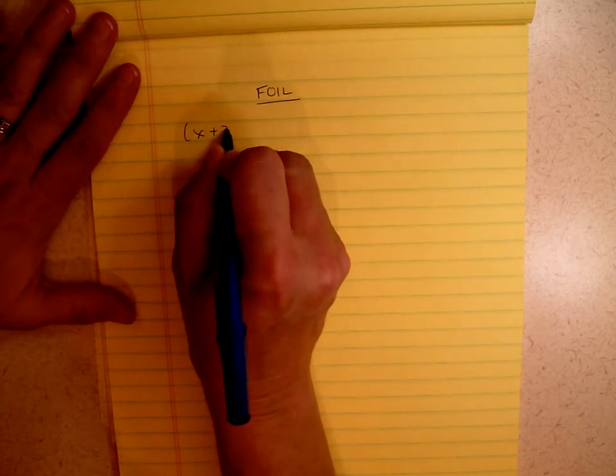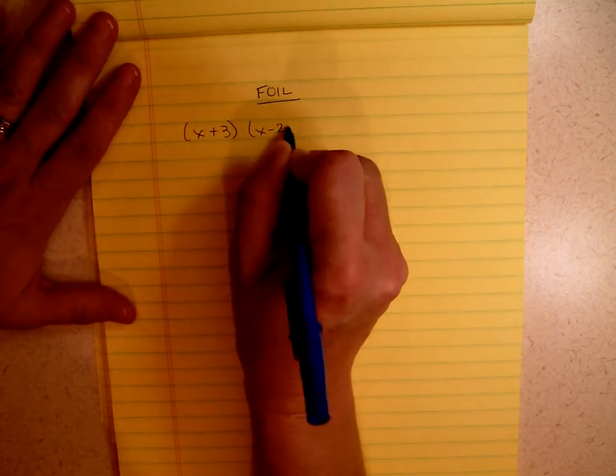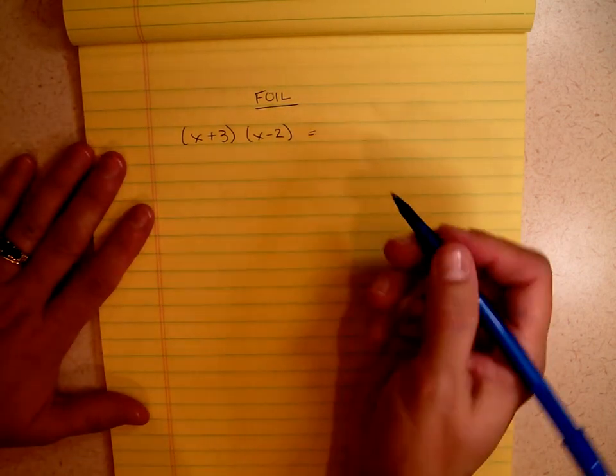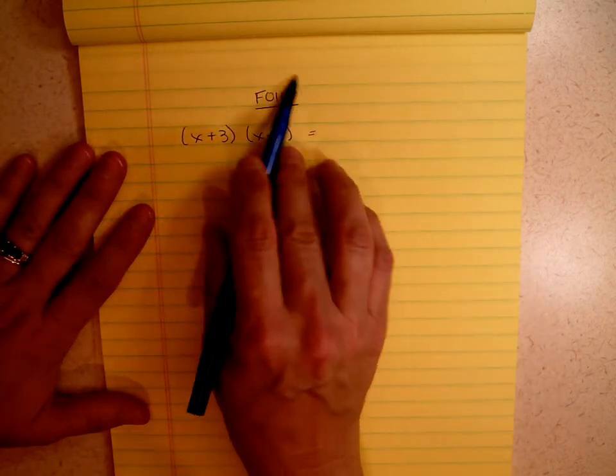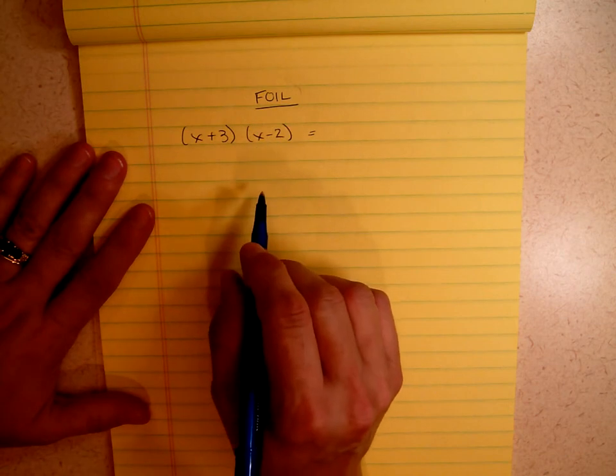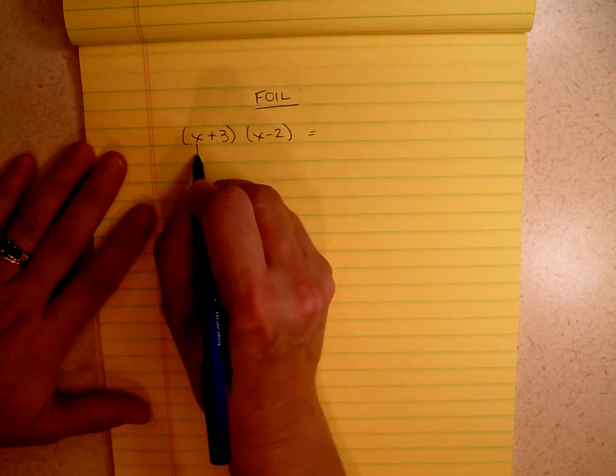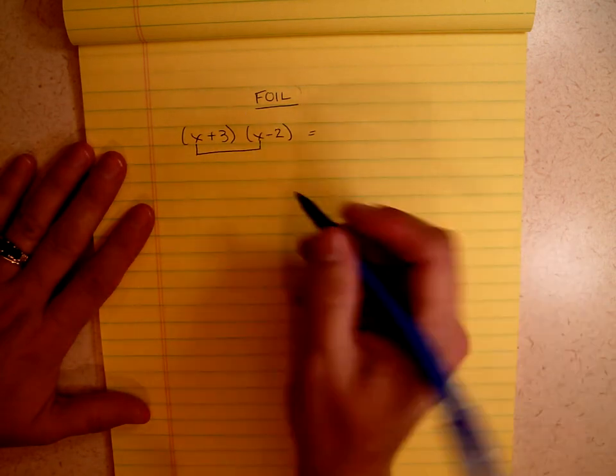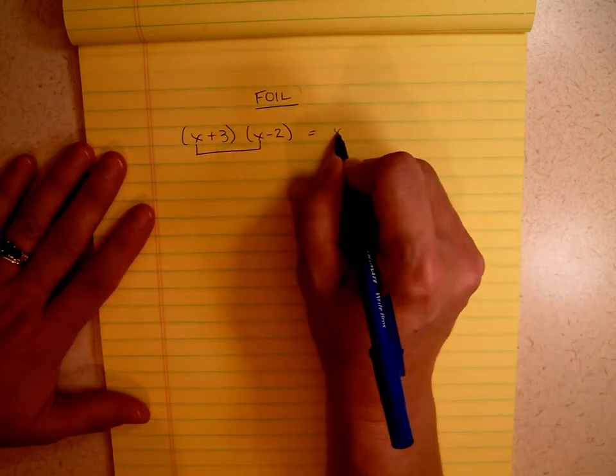If we have x plus 3 times x minus 2, and your teacher asks you to FOIL it, what they're talking about is an acronym. FOIL stands for certain words. F is first. So you're going to take the first element from here and the first element from here, multiply it together. So x times x is x squared.